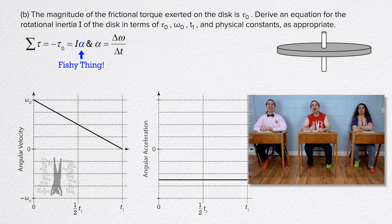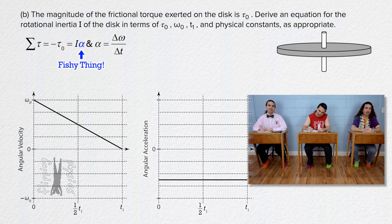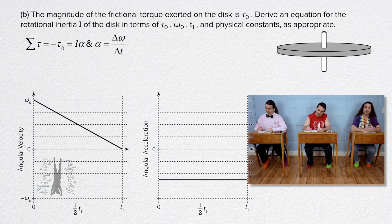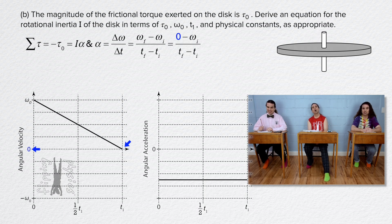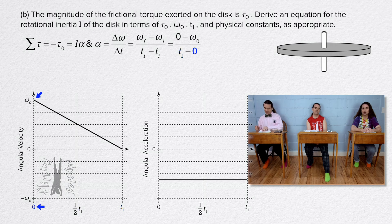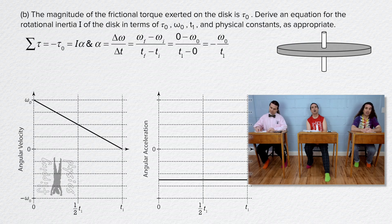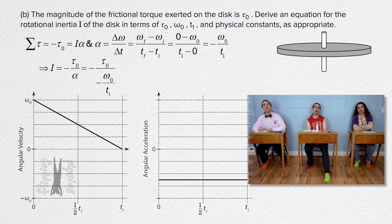Because angular acceleration is not one of the terms we need to solve rotational inertia in terms of, we need to substitute something in for angular acceleration. Angular acceleration equals change in angular velocity over change in time. Change in means final minus initial. The final angular velocity is zero because the wheel comes to rest at the end. The initial angular velocity is omega naught. The final time is t1 and the initial time was defined as zero. That means the angular acceleration equals the negative of omega naught over t1. We can now solve for rotational inertia and get: rotational inertia equals torque naught times t1 divided by omega naught.